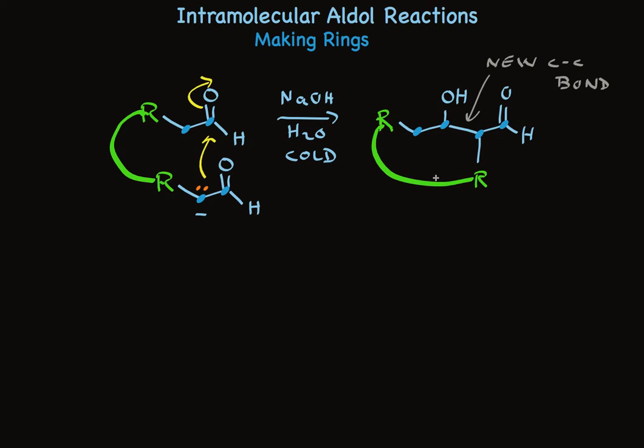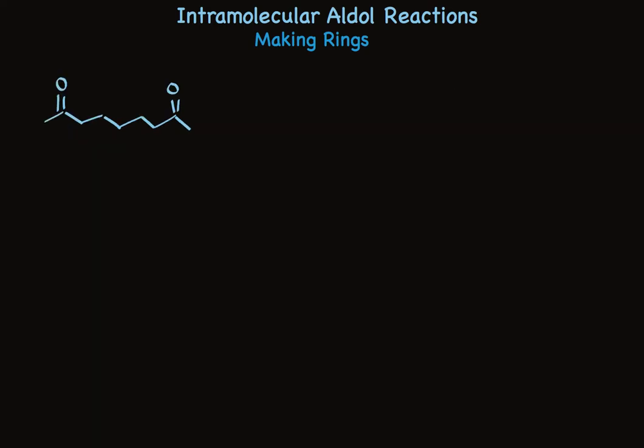Ketones generally don't do real well in aldol reactions for a variety of reasons, but for the intramolecular aldehyde reaction, ketones are usually the substrates, and it turns out they work really well under these conditions. Take a look at these examples. When you treat a symmetrical diketone with aldehyde conditions, you make a cyclic product. The size of the ring depends on the diketone you choose.